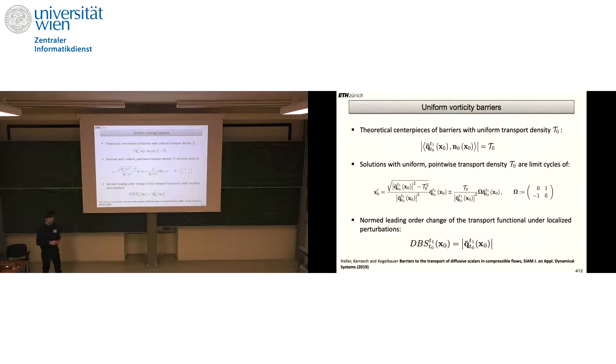One can prove that the linear change to the transport functional under small normal perturbation at every point on the actual material extremizer is given by the norm of the Q field. This is handy because it can be used as a predictive diagnostic. Before we even have any boundary, we can compute this field, and the ridges will delineate the most influential transport barriers.